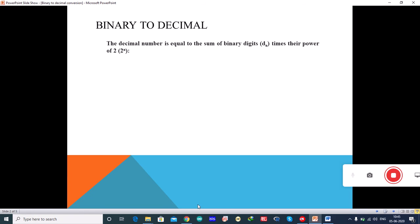The decimal number is equal to sum of binary digits dn times the power of 2, that is 2 power n. Here, dn is binary number, that is d0, d1, d2 and 2 power n are powers of 2 and n is number of bits what you have.